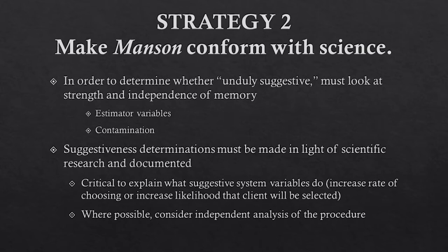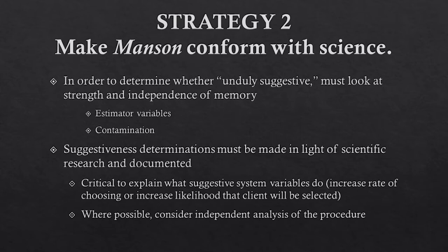If and when that strategy fails and you do not convince the trial court to abandon this test, at least the court should make Manson conform with the science. So at step one, when looking at suggestiveness, you want to be explaining to the court why a particular witness is particularly susceptible to suggestion. This is the whole thing about it not being a one-size-fits-all test. You want to convince the court that it needs to be looking at the strength and independence of the memory to begin with — the estimator variables — and then explore how the suggestive system variables would interact with those estimator variables to further erode the reliability of the identification.